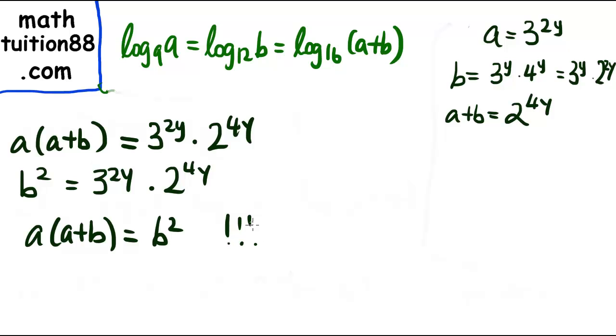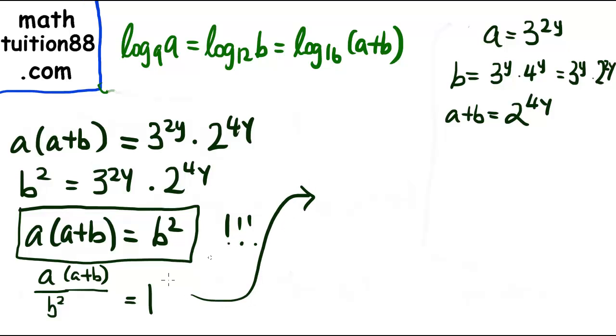Then once we get this very critical observation, we can divide throughout by b² to get a/b times (a+b)/b = 1. We can expand the numerator: (a² + ab)/b² = 1. And we can separate it out: (a/b)² + a/b = 1.